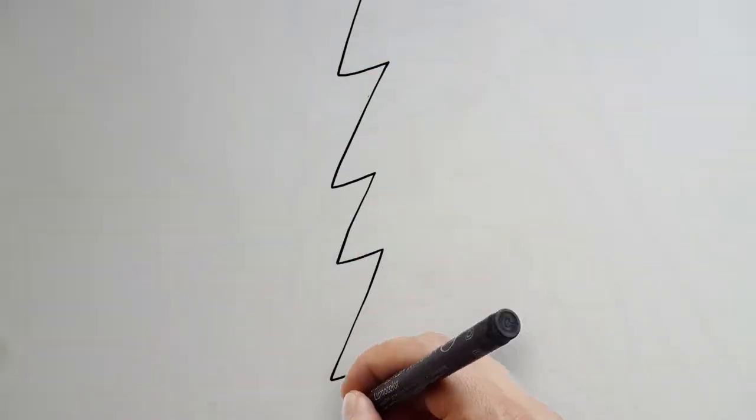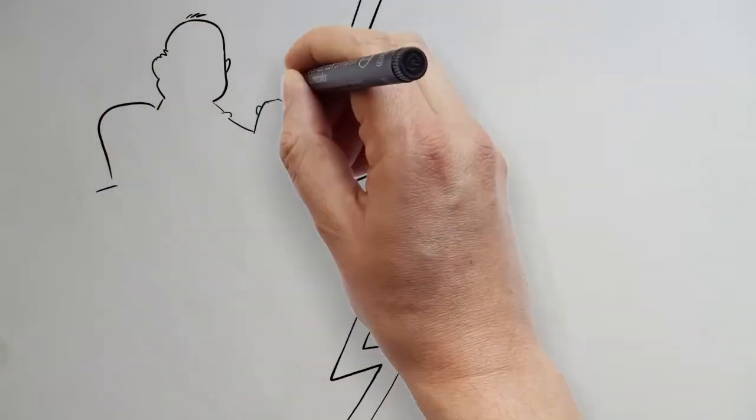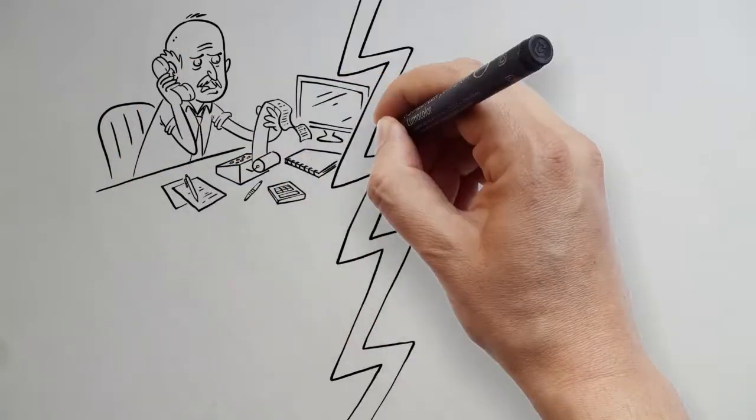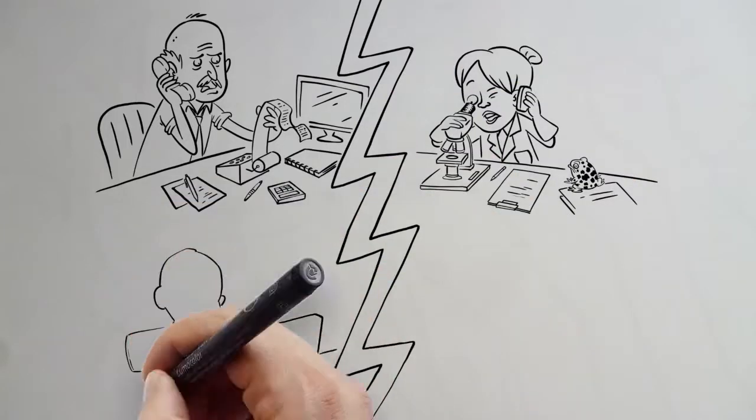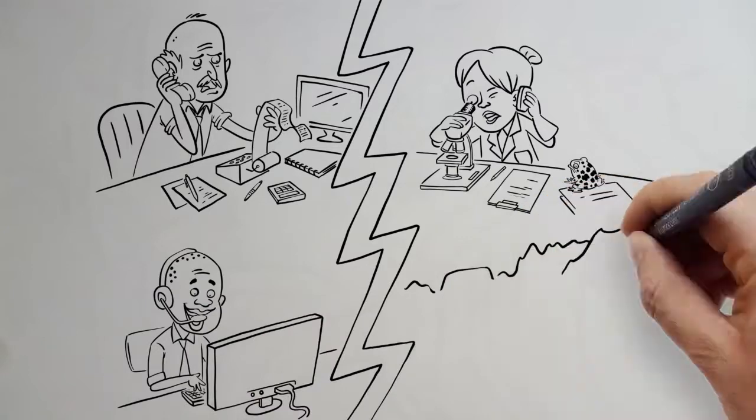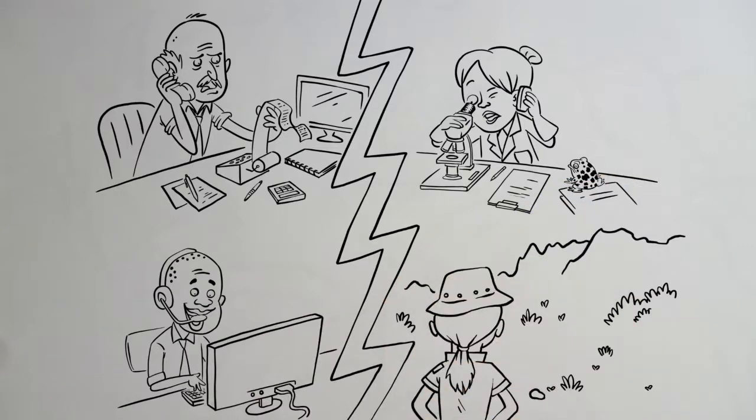Sometimes it seems that some of our priorities are at odds with each other. The accountant is calling for cost savings, while the researcher is asking for more money, and the call center operator is working indoors on a computer, while the field ranger is outdoors all day with the mountains as a screensaver.